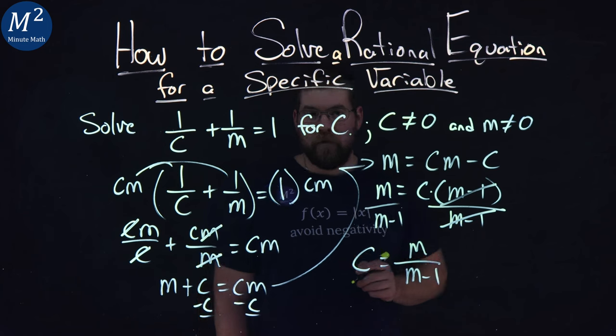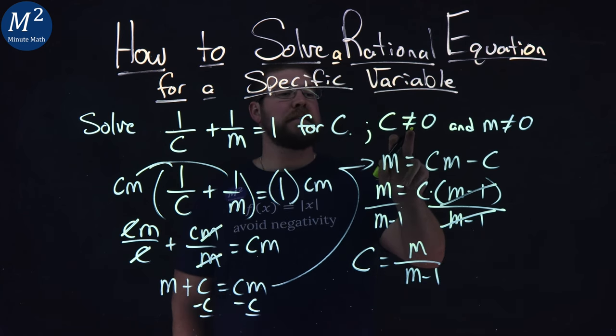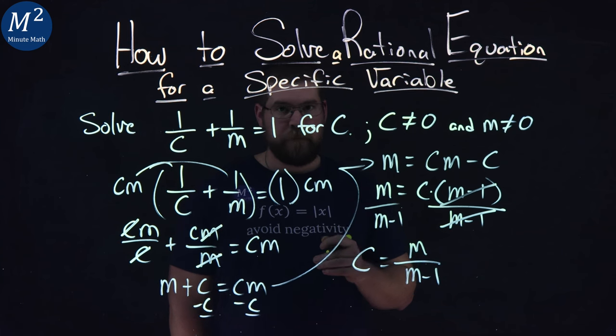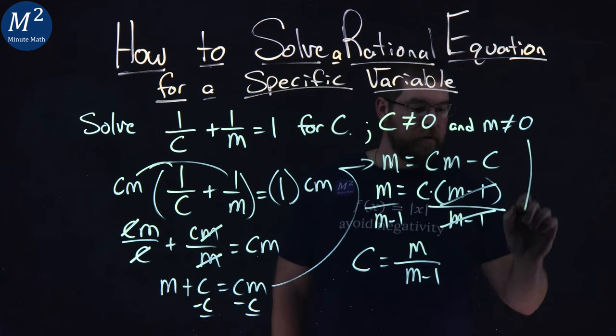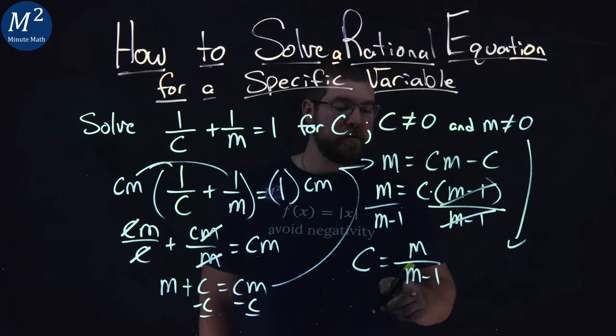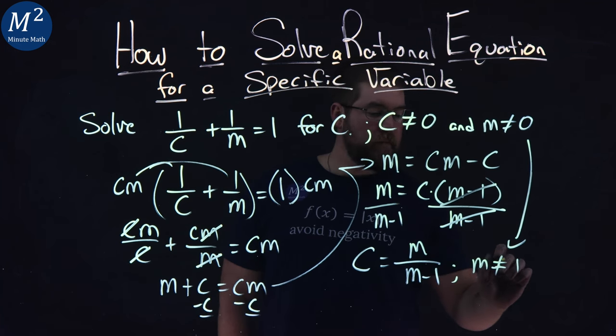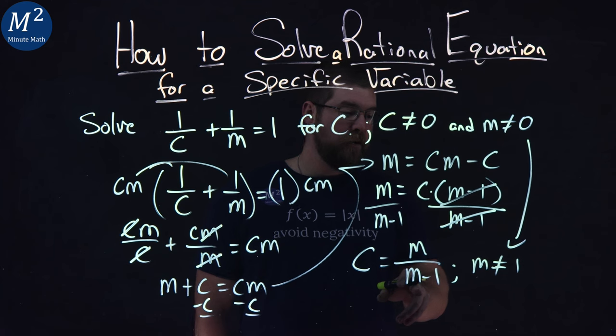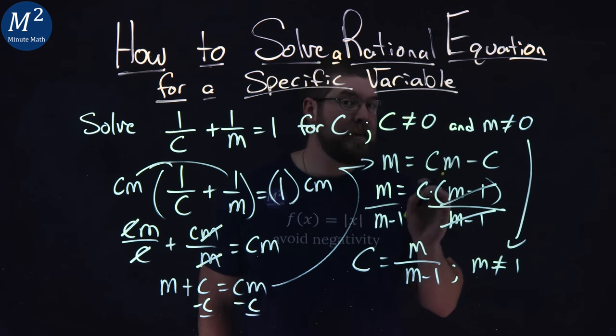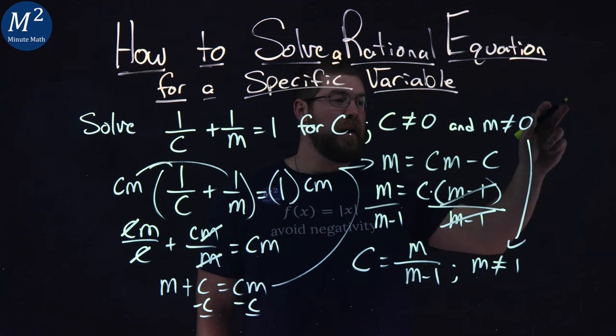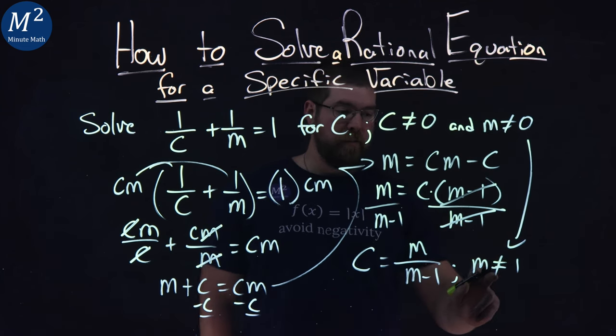But now, there's one thing I want to note before I'm finished. From the beginning, we said c cannot equal 0, and m cannot equal 0 as well. When we got to the end, we want to apply that, as well as, what can m not equal again? m cannot equal 1, because once we simplify this, if m was 1 in the denominator, we'd be dividing by 0, and we can't do that. So it's important to note: c can't be 0, m can't be 0, and m can't be 1.